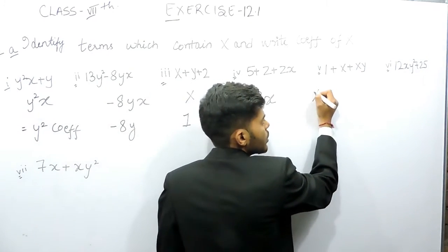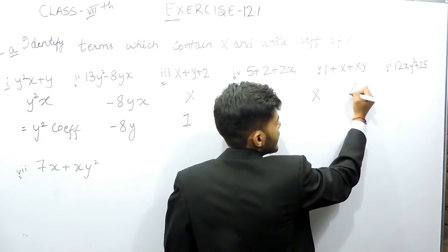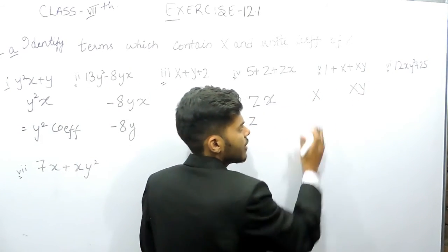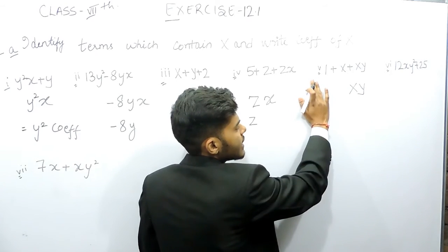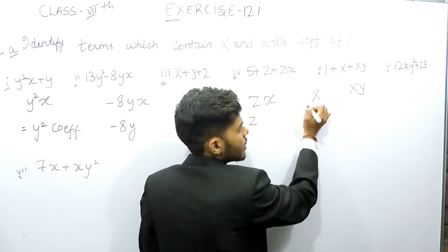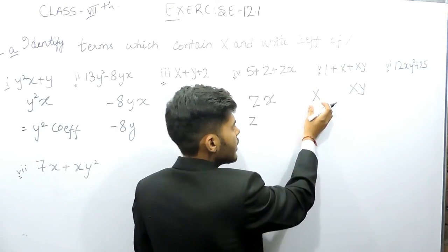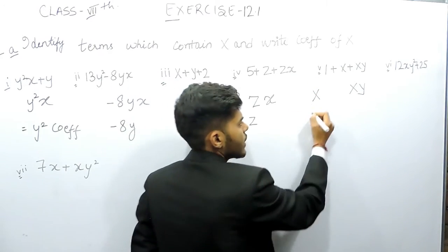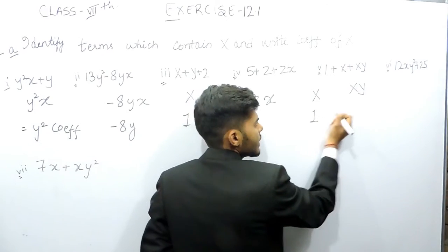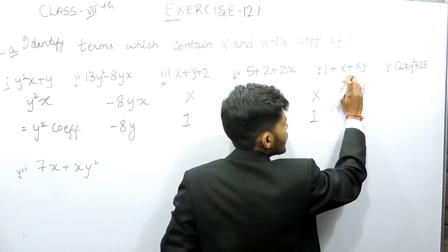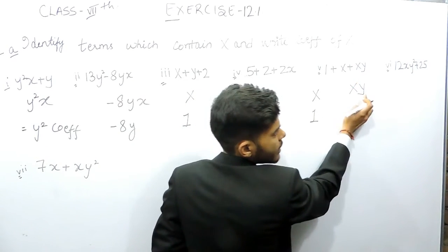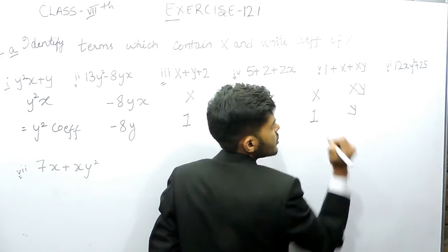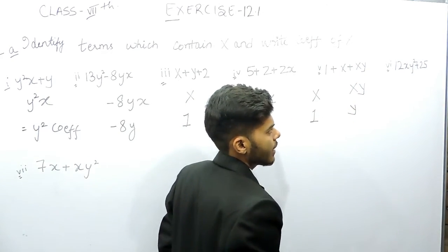In this one we have two terms having x in it. First is x and second is xy. We'll remove this x and there remains 1, so 1 is the coefficient of x. And when we remove this x from xy, there remains y, so y is the coefficient of x.